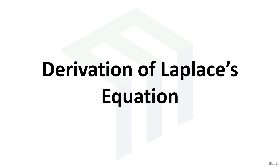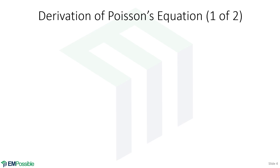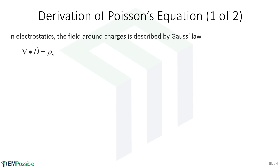Derivation of Laplace's equation. The derivation starts by deriving Poisson's equation — that's the more general equation. So in electrostatics, we have Gauss's law, which says the divergence of the electric flux equals the volume charge density.